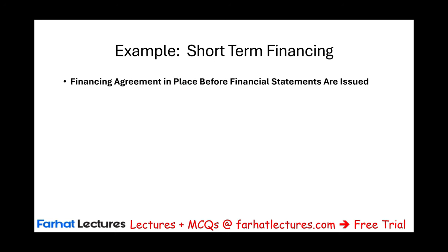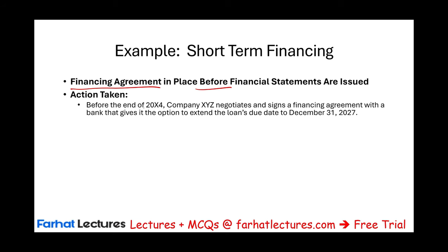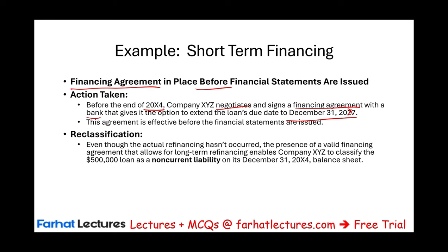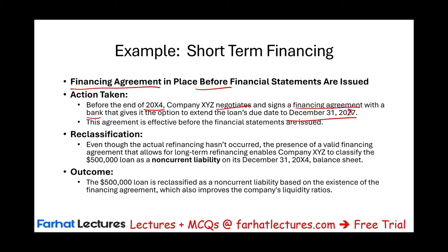In the third scenario, we have a financing agreement in place before the financial statements are issued. Before the end of 20X4, XYZ has signed and negotiated a financing agreement with a bank that gives it the option to extend the loan until December 31st, 20X7. The agreement is effective before the financial statements are issued. Under those circumstances, we can reclassify the loan as long-term. This will again improve the company's liquidity ratios. It's important not to forget the implications of short-term versus long-term debt classification.